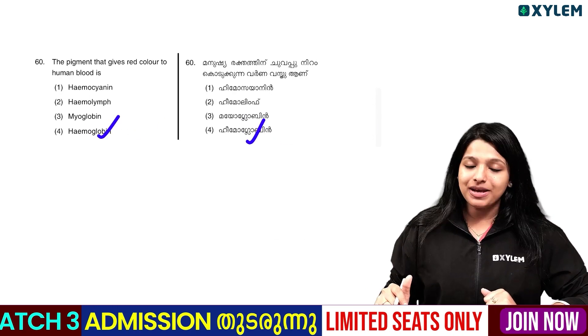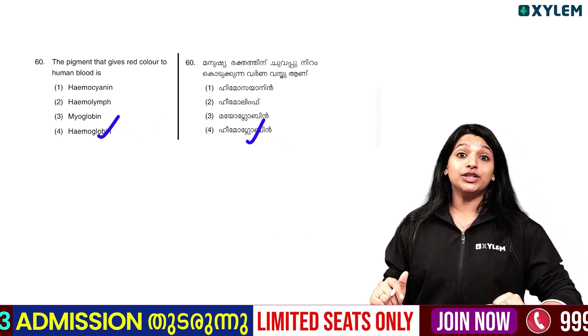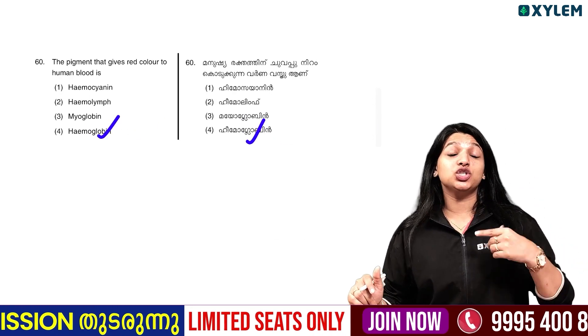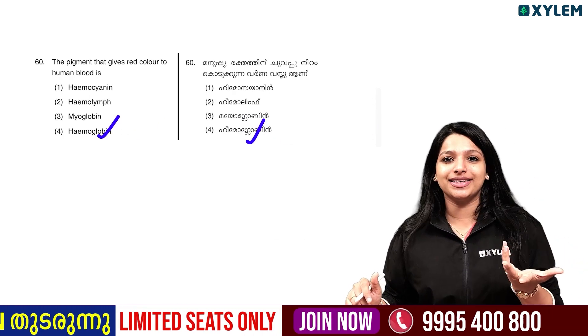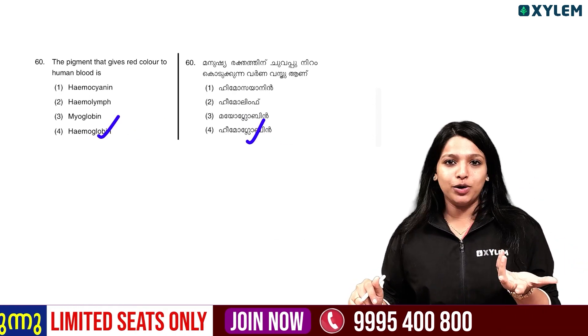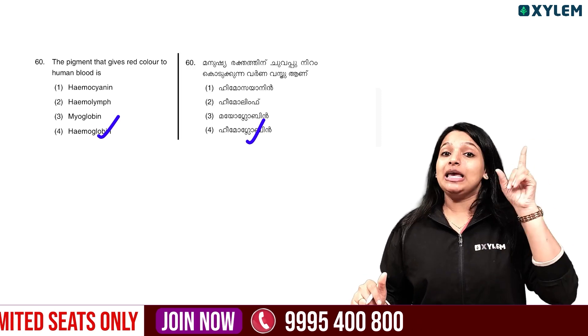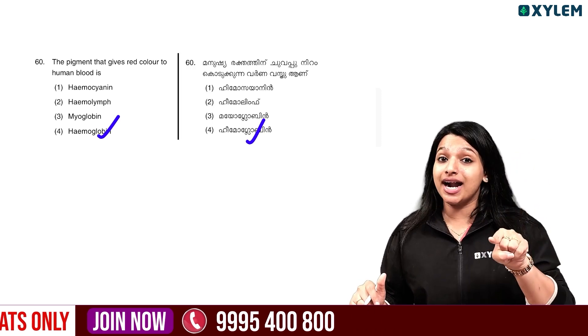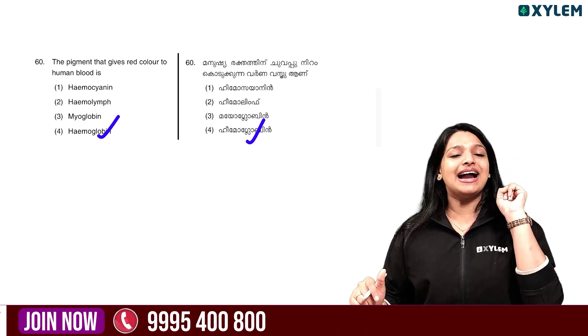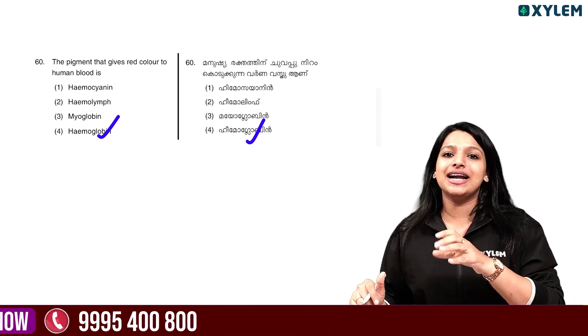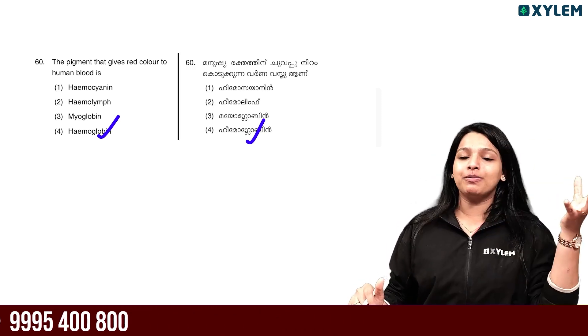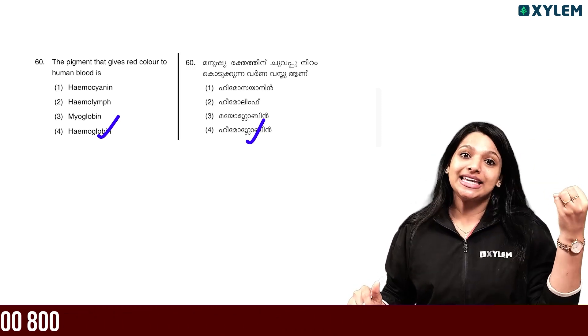The pigment that gives red colour to blood — the answer is hemoglobin. Hemoglobin is found in RBCs and is responsible for carrying oxygen and carbon dioxide.